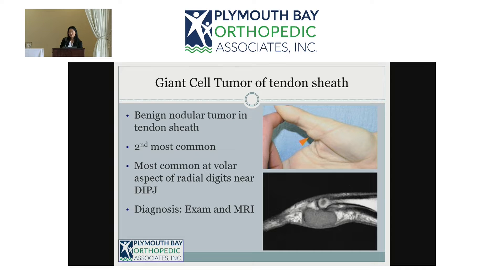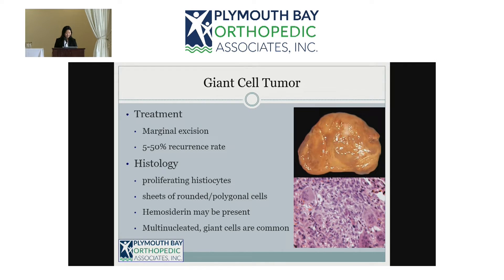Moving out to the fingers, the giant cell tumor of tendon sheath — despite its name — is actually very benign and does not turn into cancer. It's the second most common mass found in the fingers, usually found on the volar surface, more distally. Diagnosis is by exam as well as MRI findings shown here.